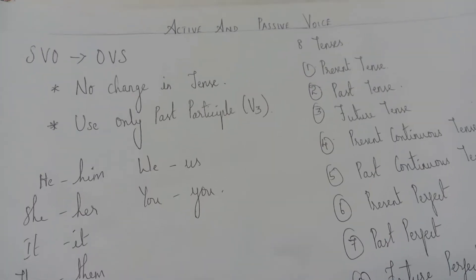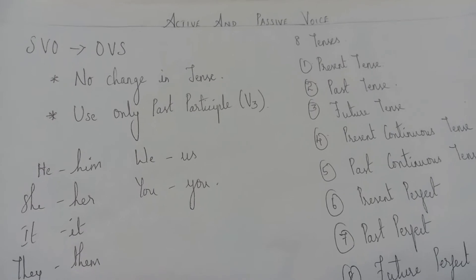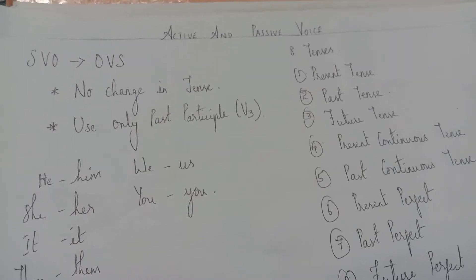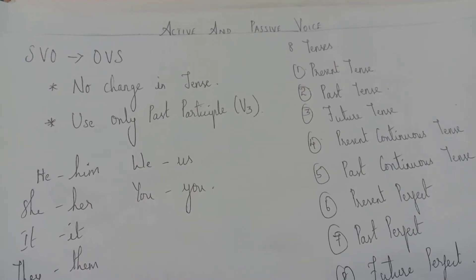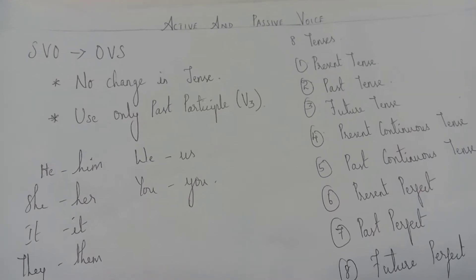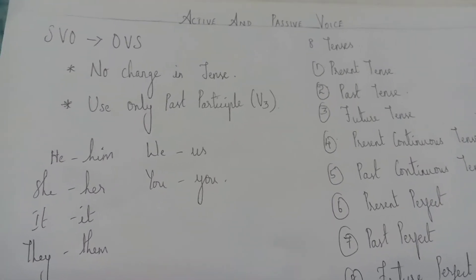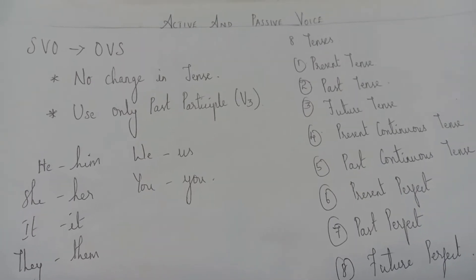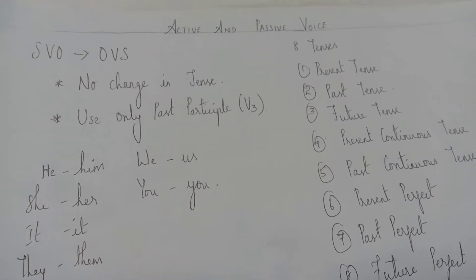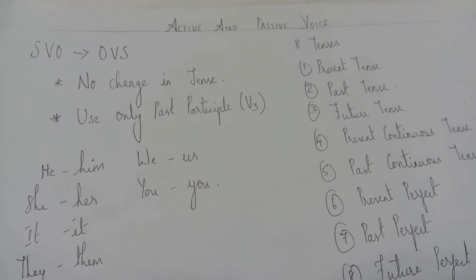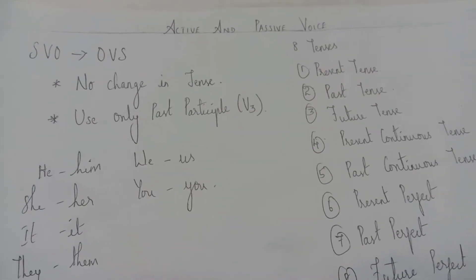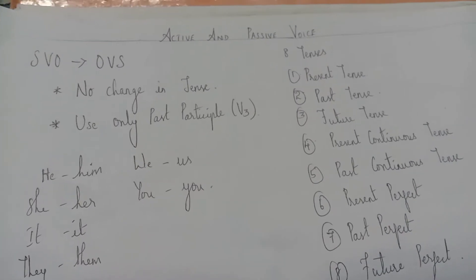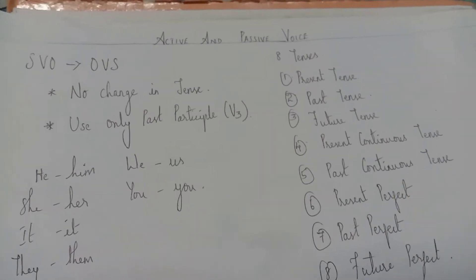In active voice, the sentence comes in SVO pattern — subject, verb, object. When changed to passive, it becomes OVS — object, verb, subject. For example, 'English miss class edutthanga' is active voice, and 'class English missaal edukkappattadhu' is passive voice.